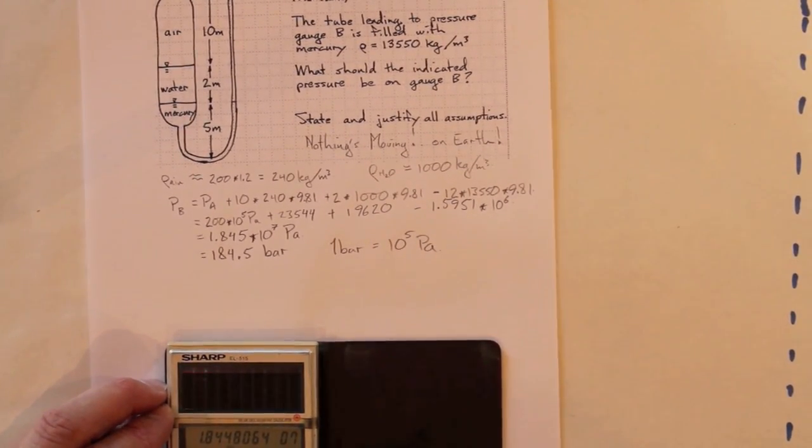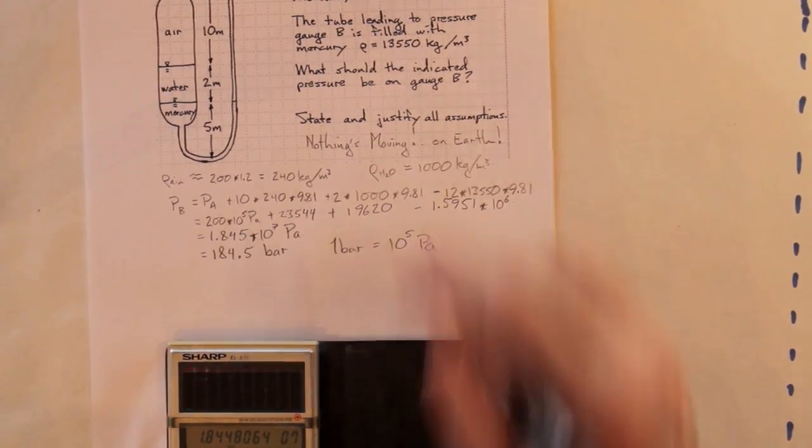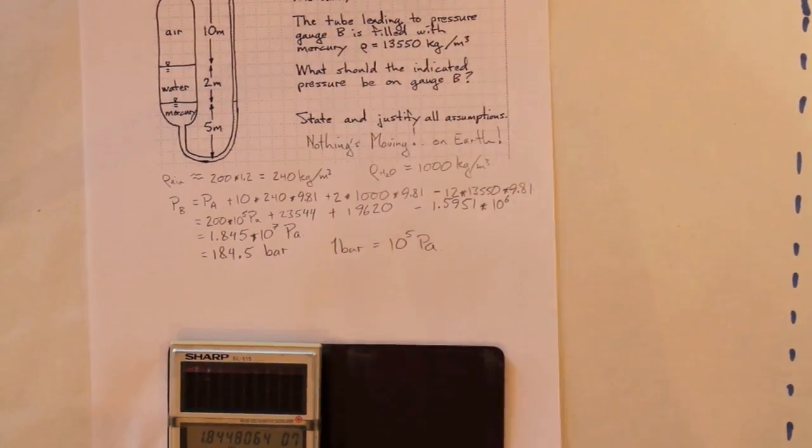That should be the pressure that's showing on the gauge at location B, right up here. Good call. All right. Thank you.